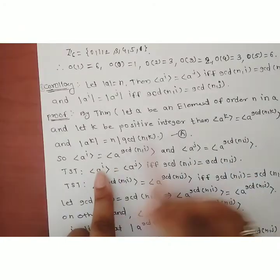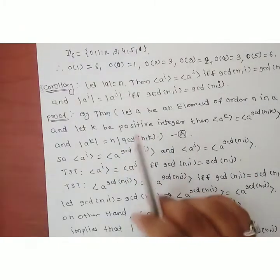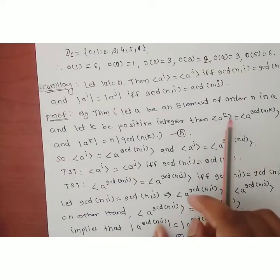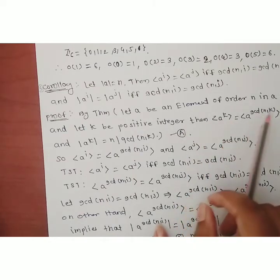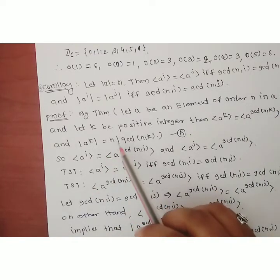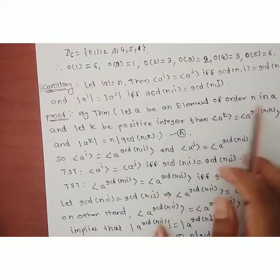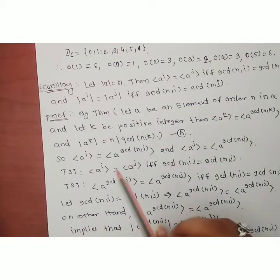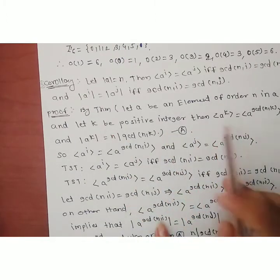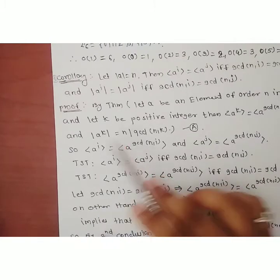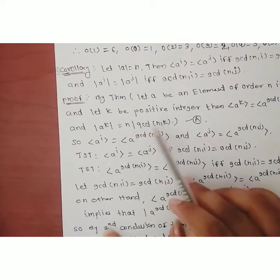We use Theorem 3 to prove this. From Theorem 3: ⟨a^k⟩ = ⟨a^(gcd(n,k))⟩ and order(a^k) = n / gcd(n,k). Applying this with k = i gives ⟨a^i⟩ = ⟨a^(gcd(n,i))⟩, and with k = j gives ⟨a^j⟩ = ⟨a^(gcd(n,j))⟩. We need to show ⟨a^i⟩ = ⟨a^j⟩ if and only if gcd(n,i) = gcd(n,j).